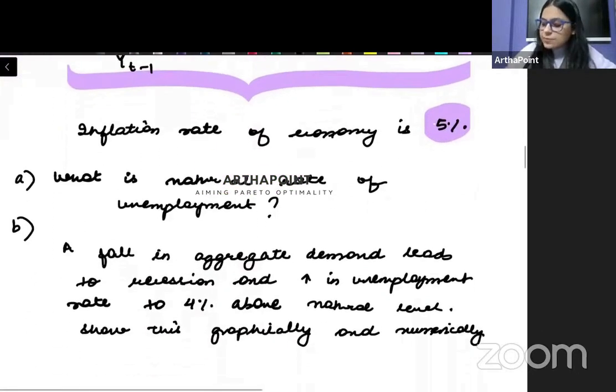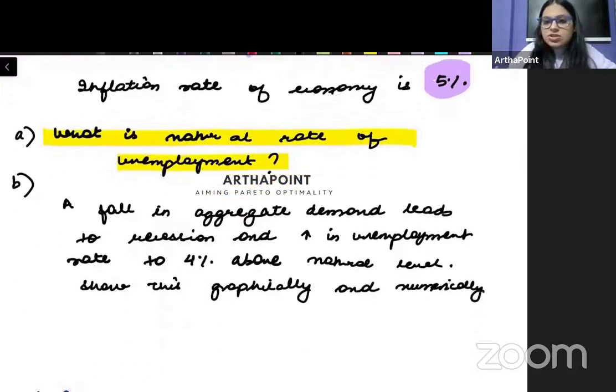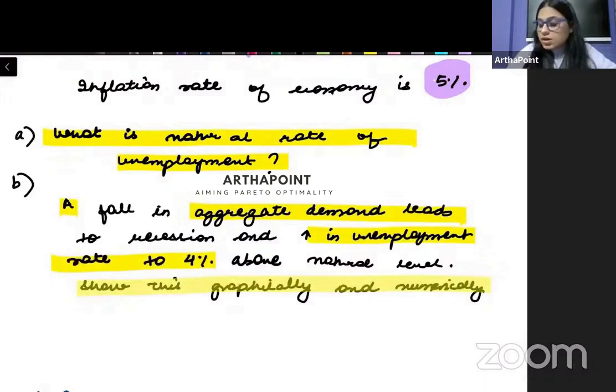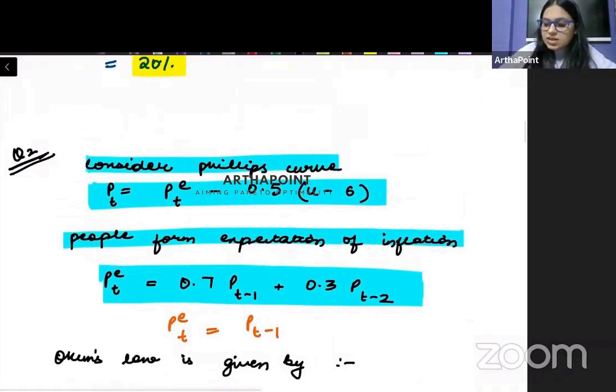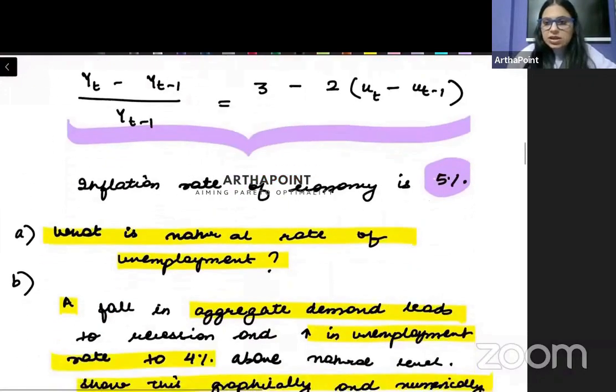And initial inflation rate will be given to you. Now how can questions be formed from this? So they may ask you what is the natural rate of unemployment. This kind of question will be asked. Very important. And then they may just tweak the question. So they'll say something like, there has been an increase in unemployment rate to 4%. What will happen to your equilibrium levels of inflation in the economy? So it is very important that you practice these types of numericals as well.